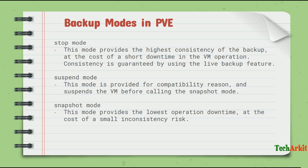Suspend mode provides compatibility and suspends the VM before calling the snapshot. It will just suspend the VM, take a snapshot of that virtual machine, and then convert that snapshot into the backup. This involves less downtime — maybe a few minutes based on data size — because it only suspends the VM briefly and then brings it back.